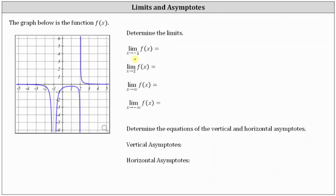Let's begin by sketching a vertical line at x equals negative one. For the limit to exist, we must be approaching the same function value from the left and right of x equals negative one. As we approach x equals negative one from the left, notice how the function values decrease without bound. As we approach x equals negative one from the right, once again the function values decrease without bound. Since the function values approach negative infinity from the left and right of x equals negative one, we do indicate the limit of f of x as x approaches negative one approaches negative infinity.